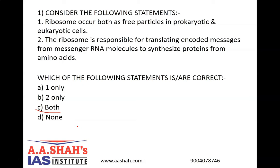Eukaryotic cells contain membrane-bound organelles including a nucleus. Eukaryotes can be single-celled or multi-celled, such as fungi, plants, and insects. Bacteria are an example of prokaryotes. Prokaryotic cells do not contain a nucleus or any other membrane-bound organelle. Prokaryotes include two groups: bacteria and another group called archaea.